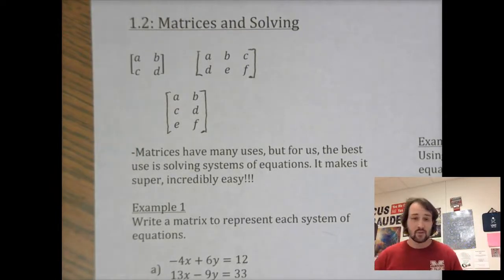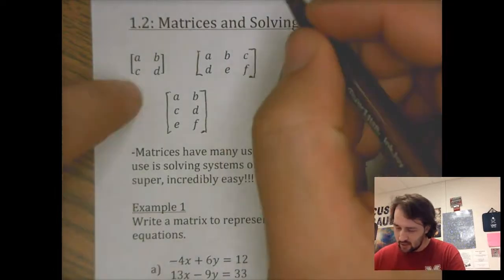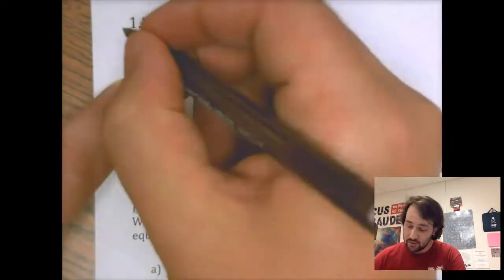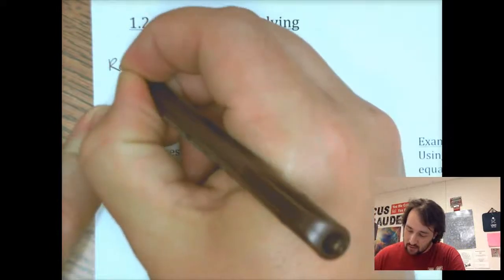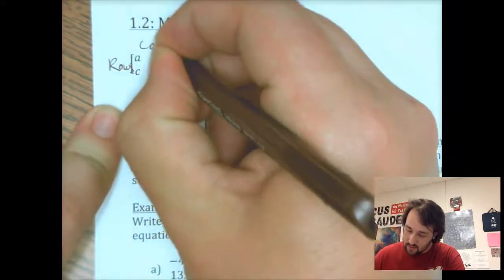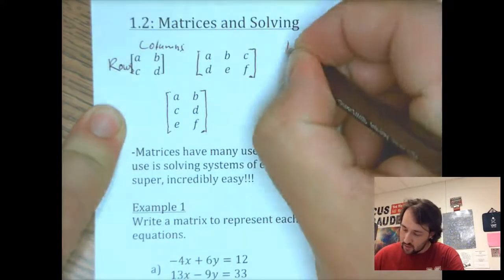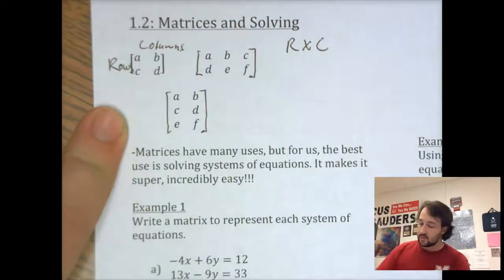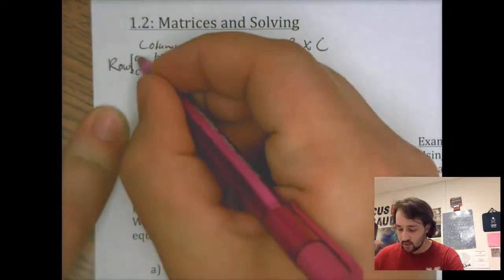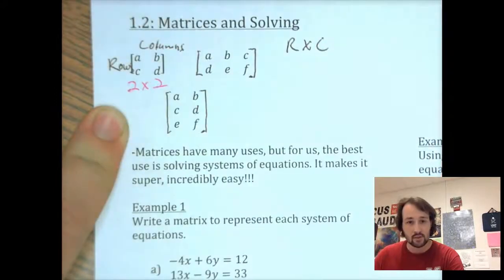So what a matrix is — it came around in the 1400s or 1500s, I can't remember — but these are all matrices. Matrices are measured by how many rows and how many columns they have. So a matrix is always denoted rows by columns. The size of this matrix, since it has two rows and two columns, is a two-by-two matrix.